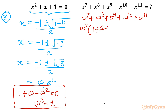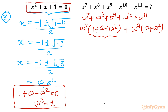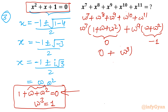Taking omega power 7 common gives 1 plus omega plus omega square in the bracket, and taking omega power 9 common from the remaining terms gives omega plus omega square. The first bracket equals 0. From the equation with x equal to omega, the second bracket omega plus omega square equals negative 1. So we get omega power 9 times minus 1, and omega cube whole cube equals 1 cube, giving negative 1 again.